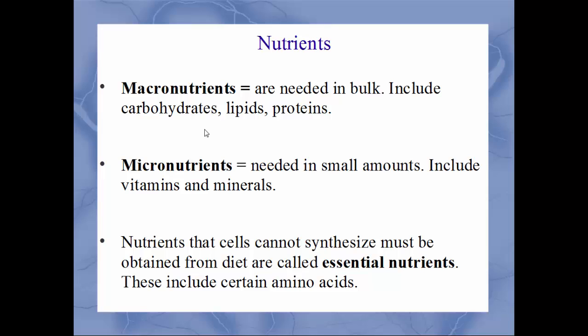Your body is fairly good at making what it needs to help grow and heal and so on. But there are some things that the body can't make — things that you have to get from your diet — and those things are called essential. An example of essential nutrients would be amino acids. There are eight essential amino acids that your body can't make on its own and must get from an external source like your diet.